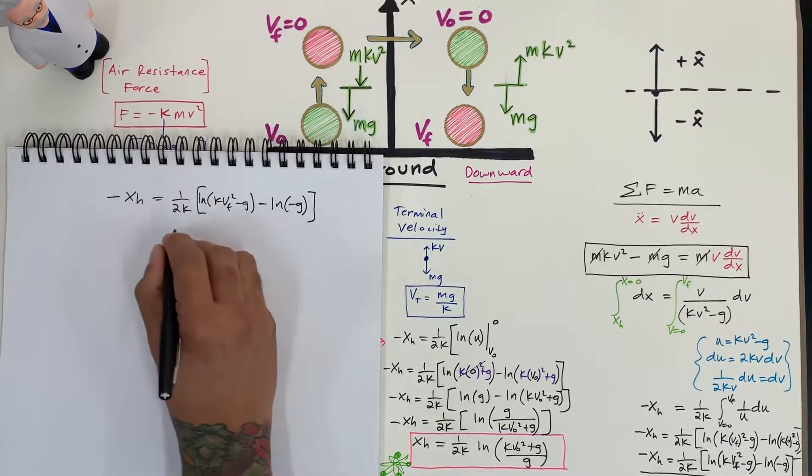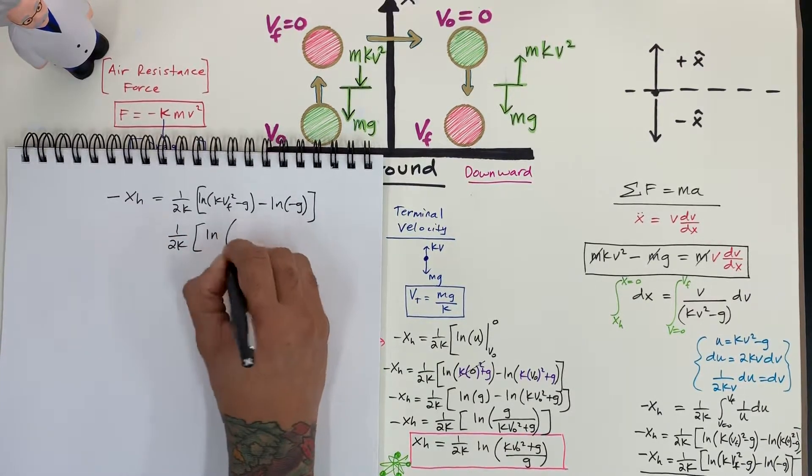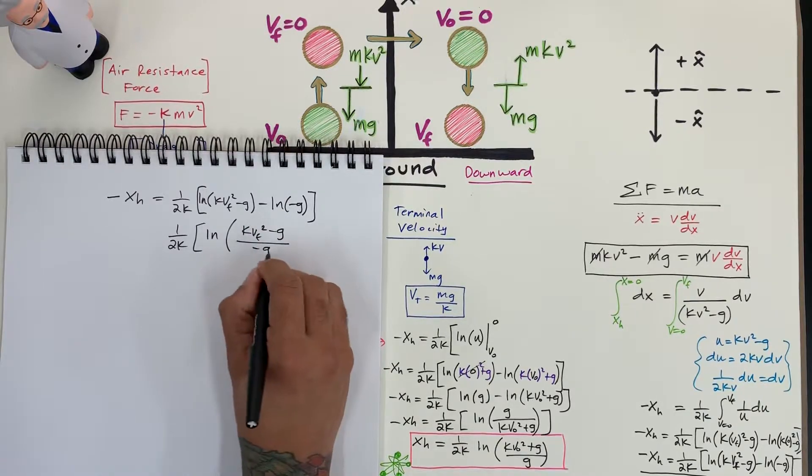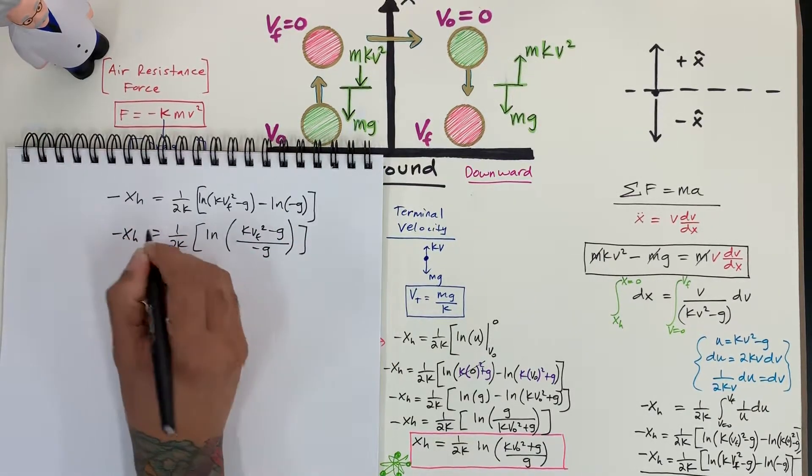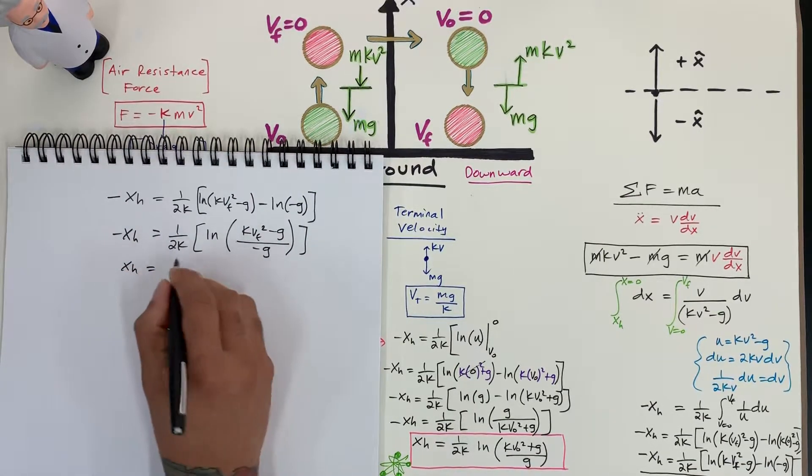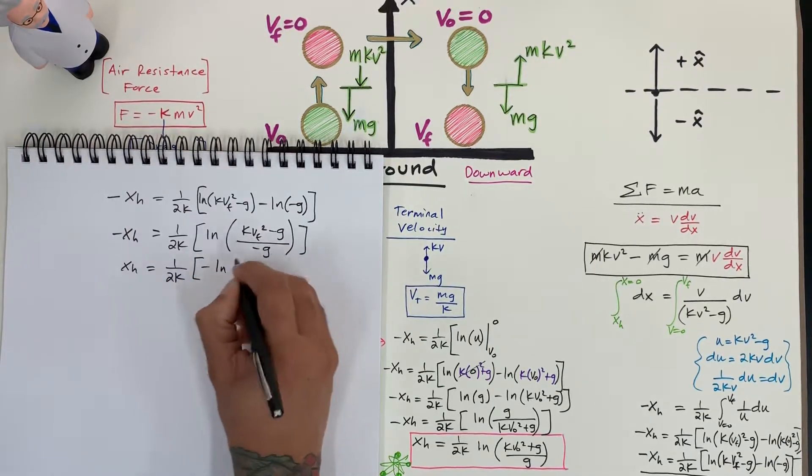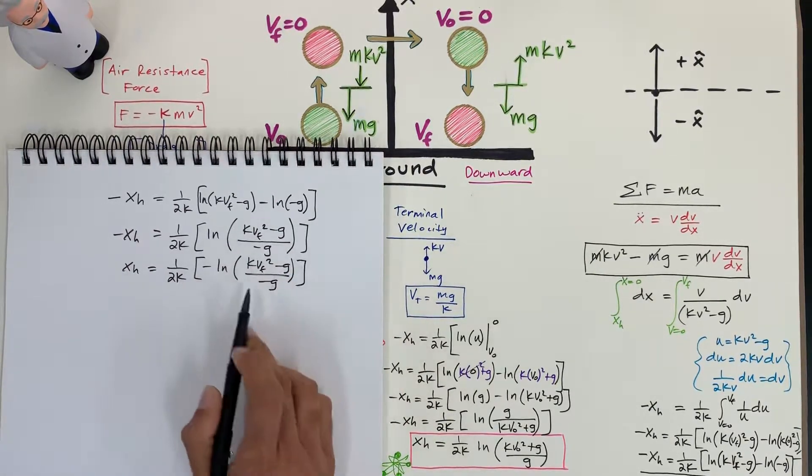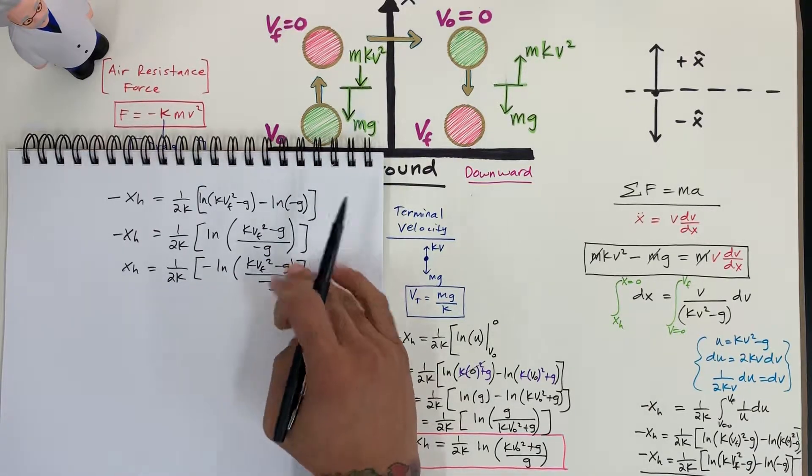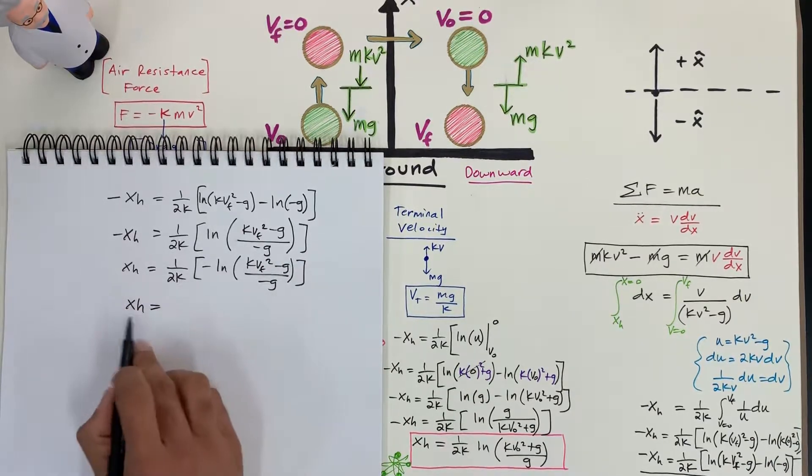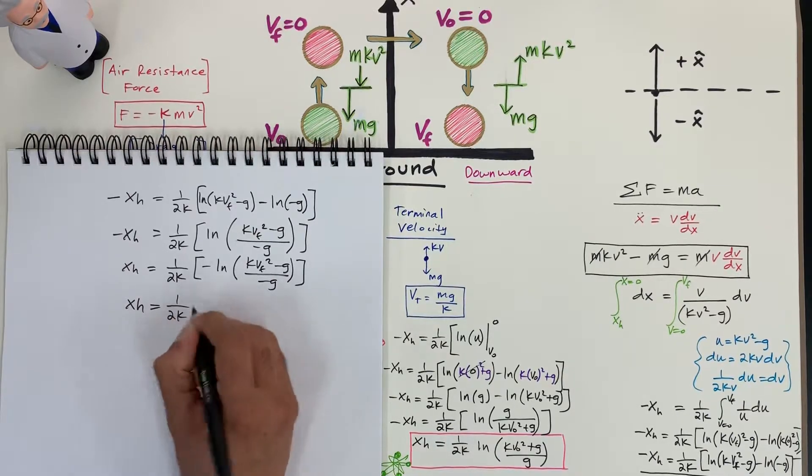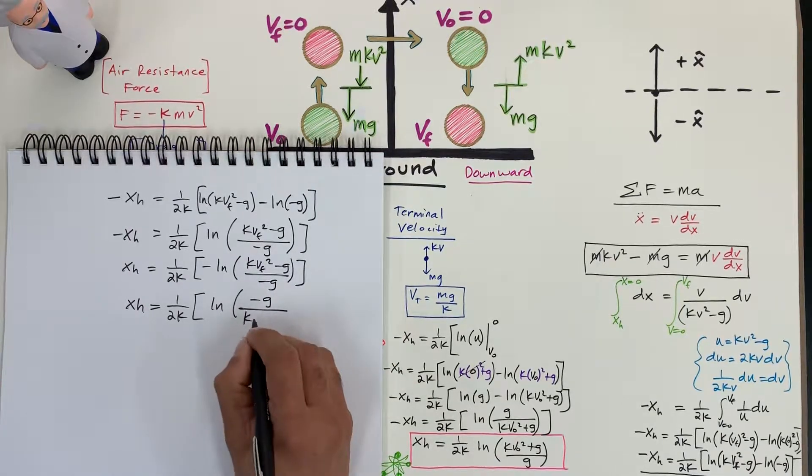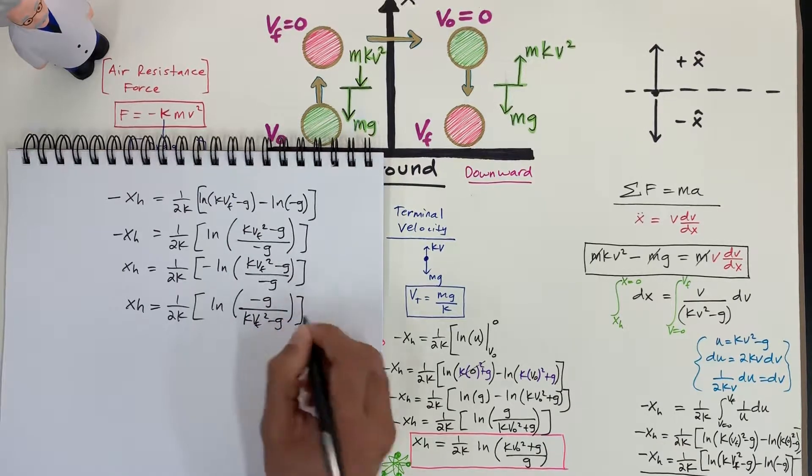This is the positive term. I'm going to write 1 over 2 k ln of k v final squared minus g, which is this term, the positive one, and this term goes on the bottom. If I pass over the negative to this side, I'm going to have x_h is equal to 1 over 2 k negative ln of k v final squared minus g over negative g. Finally, I'm going to raise this to the exponent, so I'm going to flip everything inside. So I'm going to have x_h, which is the position height, 1 over 2 k ln of negative g is now on top and k v final squared minus g.